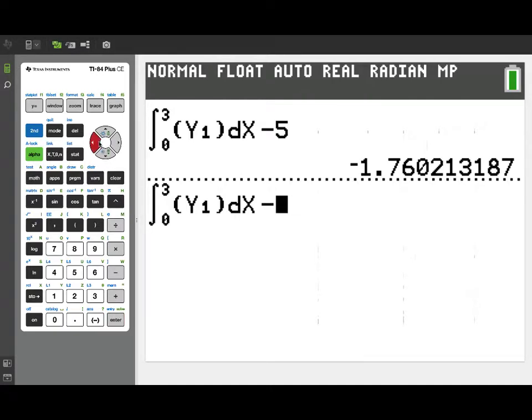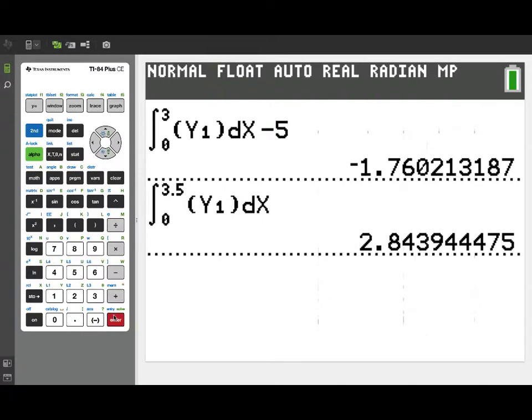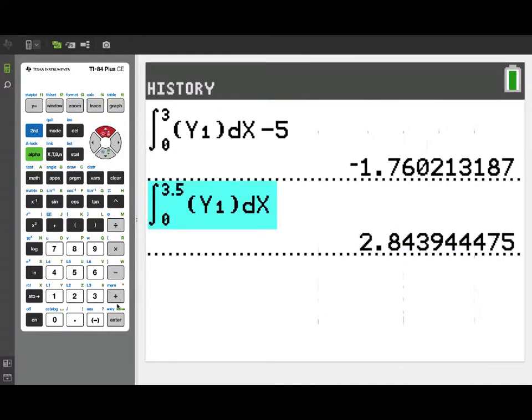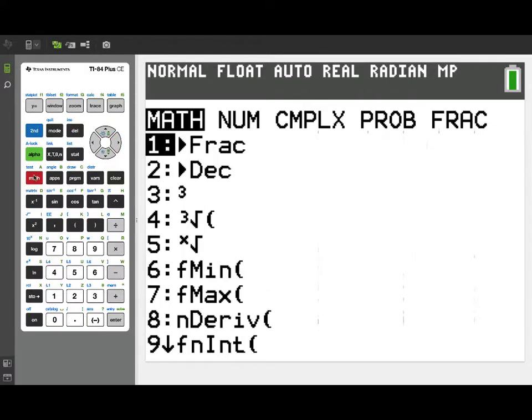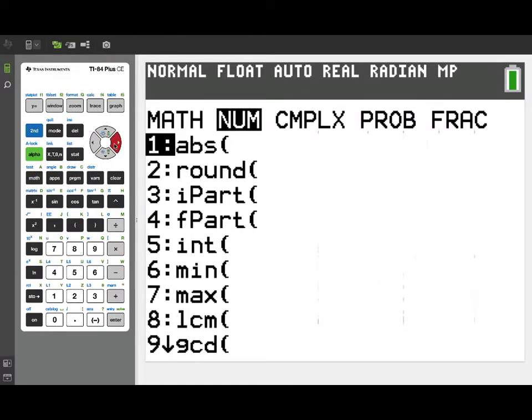Now, the next thing we're asked to calculate in this problem are a couple of integrals. One of them is from 0 to 3.5 of just the velocity function. So, I've pulled down that definite integral, editing it to match what we need, and there's the value, 2.8439. That value we need to interpret, and that's going to give us the net displacement of the particle between time t equals 0 and t equals 3.5. So, it's moved 2.8439 units to the right from where we were at time t equals 0.